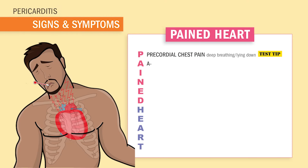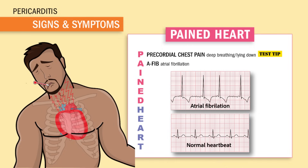A is for AFib, also called atrial fibrillation, which I call the fireworks show in the top of the heart because the atria are pumping out of control. In pericarditis, the lack of oxygen to the heart can cause patients with a history of AFib to slip into this condition.